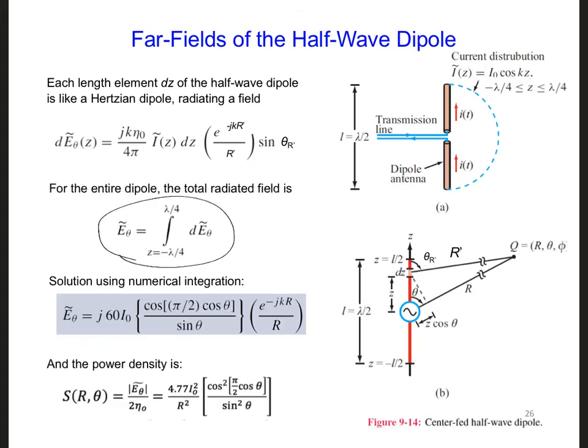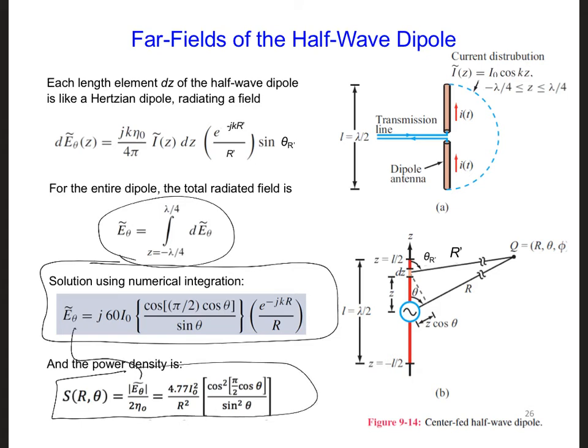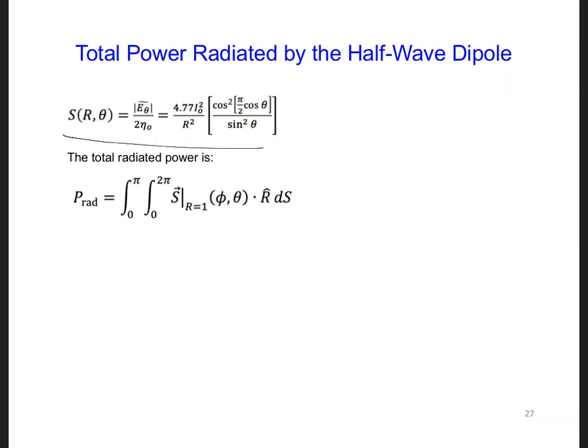After performing this integration, if we use numerical integration, we're going to get this expression. Then we can calculate the power density by plugging in the magnitude of the electric field. We can integrate this over the surface of a sphere of radius 1 meter in order to find the total radiated power. So we plug that in for r equal 1.